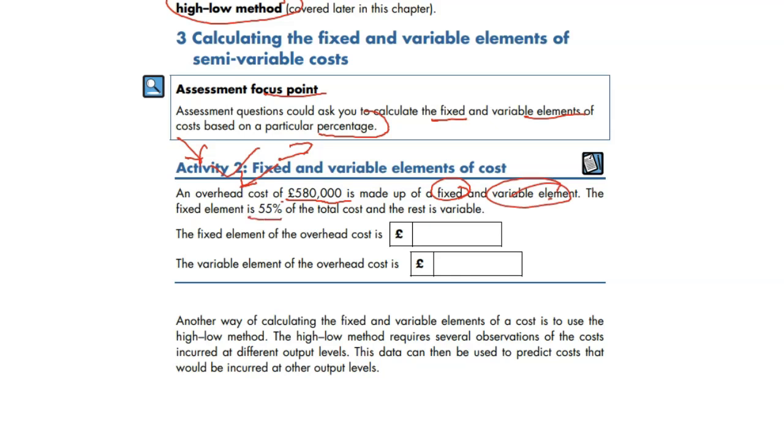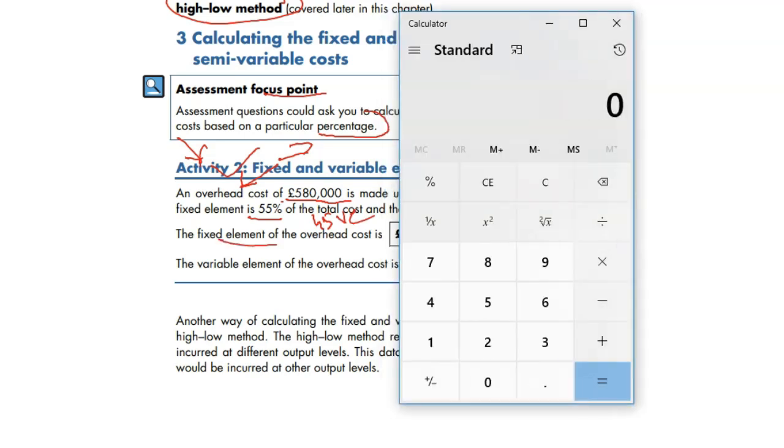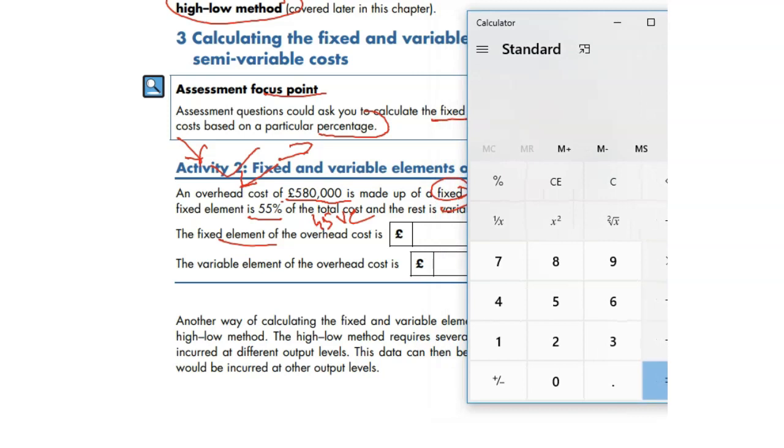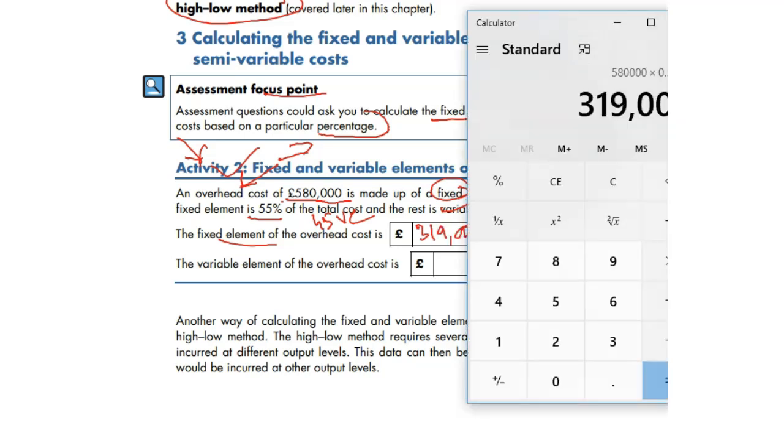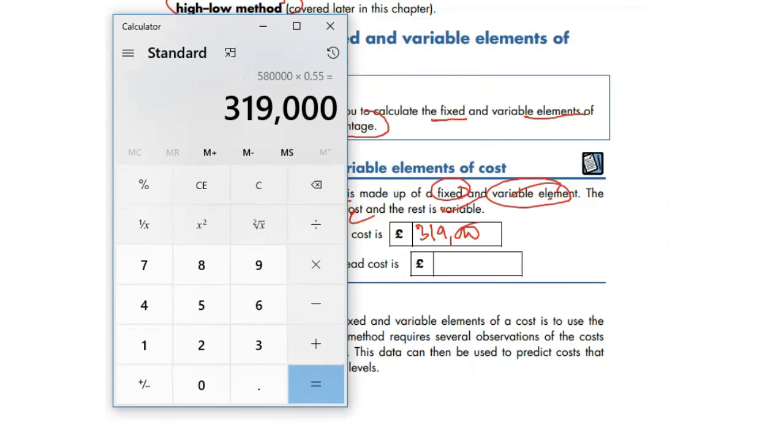The fixed is 55%, that means 45% is variable cost. Simple, easy peasy, lemon squeezy. Fixed - you just need a calculator to work it out. 580,000 times 0.55 equals 319,000. And again, 580,000 times 0.45 equals 261,000.